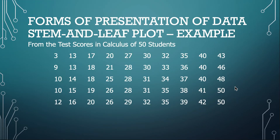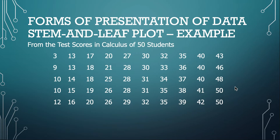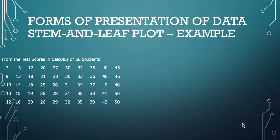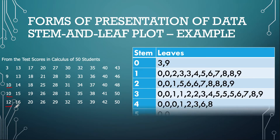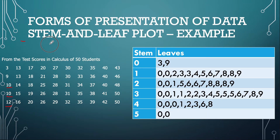Going back to our example of test scores of 50 students in calculus, let's put them in a stem and leaf plot. The scores are already arranged in ascending order. For the one-digit answers, their stems will be zero and their leaves will be 3 and 9. For 10, the stem is 1 and the leaf is 0. For 12, the stem is 1 and the leaf is 2. Continuing that process, we get this table, which is the stem and leaf plot.